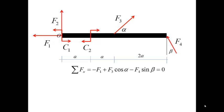The first equation is the sum of forces along the x-axis. It involves force F1, the horizontal projection of force F3, and the horizontal projection of force F4. Force F2 does not participate because it is vertical. The forces F1 and F4 enter with negative signs because their direction is opposite to the positive direction of the x-axis, and forces F3 and F4 enter through their horizontal components.